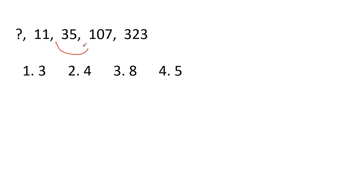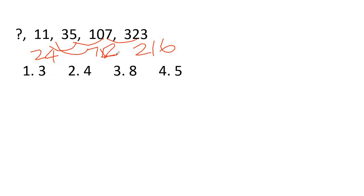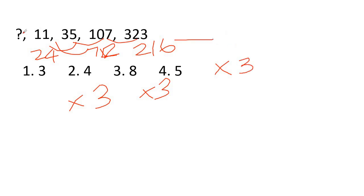Next: question mark, 11, 35, 107, 323. The pattern is multiply by 3 and add 2: so working backwards from 11, we divide by 3: 11 minus 2 is 9, divided by 3 is 3. But the answer working through the pattern is 8.